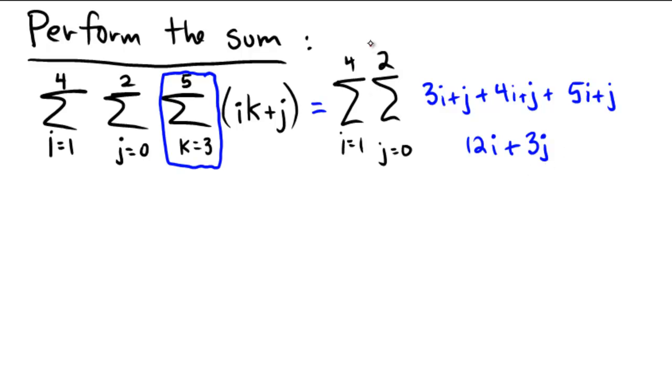So second stage, let's go to the next one, which is j equals 0 to 2. So in this stage, I'm going to again keep the i equals 1 to 4, and in red, I'm going to substitute the j for 0, then 1, then 2.